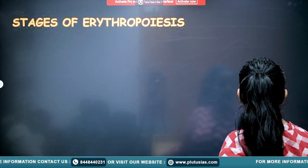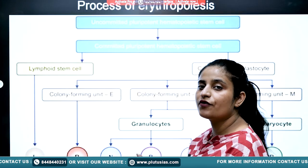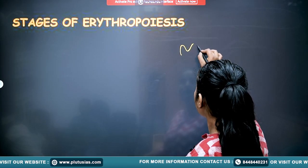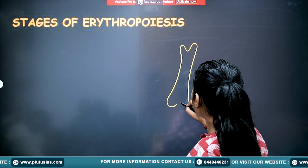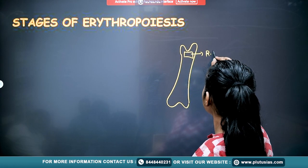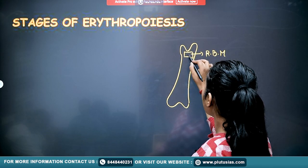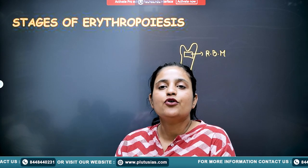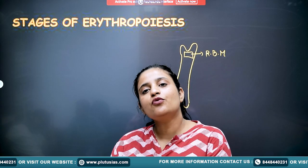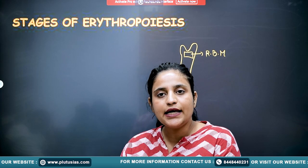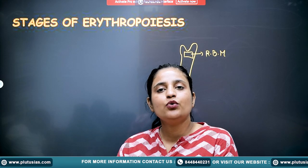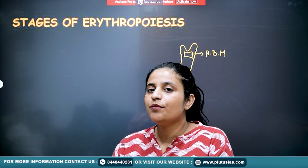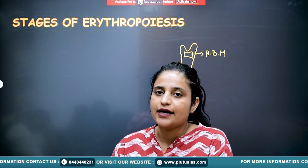Now, what are the stages of erythropoiesis? In the red bone marrow there are stem cells called hematopoietic stem cells. These have the property of being converted into any type of blood cell — RBC, WBC, or platelets.